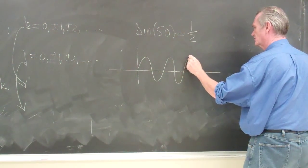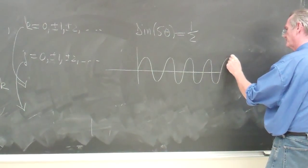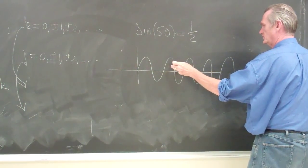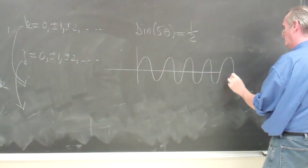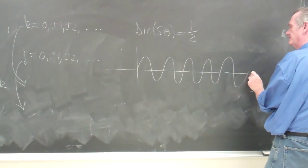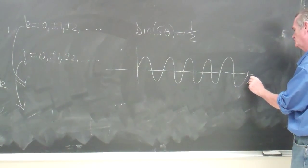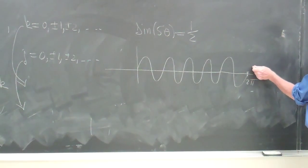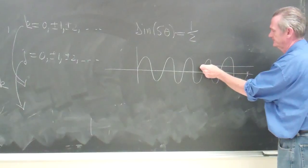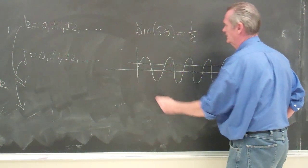Now a sine curve, sine of 5 theta, 1, 2, 3, 4, 5, would make 5 full cycles in the length 2 pi. We want the sine to be equal to 1 half, so that's going to be like that.